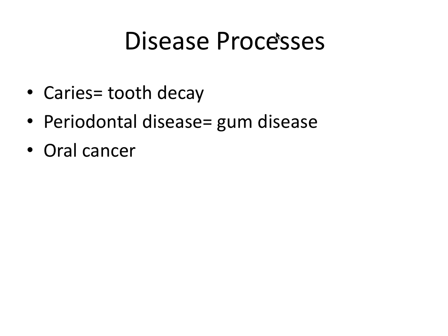So dentistry, if you think about it, really boils down to these three disease processes and how to prevent them. We have caries, or tooth decay, which is the localized destruction of tooth tissue by bacteria and their byproducts. Periodontal disease, which falls under the umbrella of gum disease, is a group of lesions affecting the tissues surrounding and supporting teeth in their sockets. And lastly, we have oral cancer. So dentistry really does boil down to these three main disease processes.